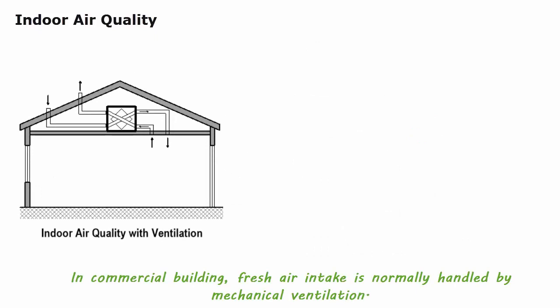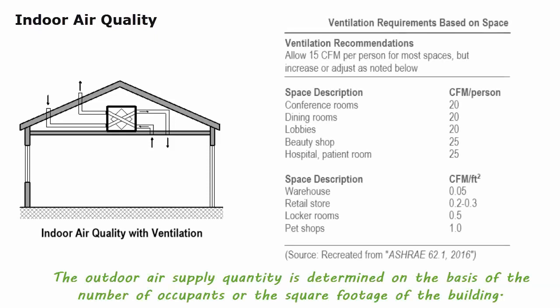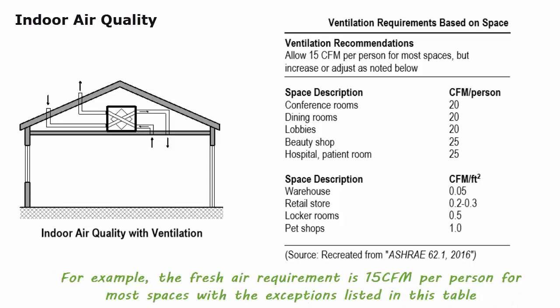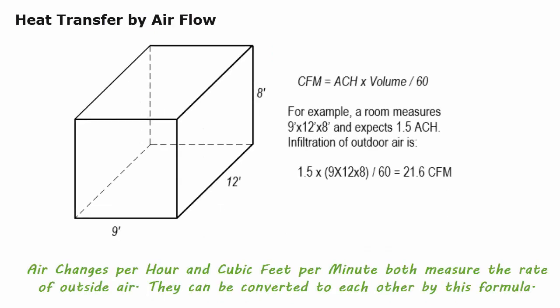In commercial buildings, fresh air intake is normally handled by mechanical ventilation. The outdoor air supply quantity is determined on the basis of the number of occupants or the square footage of the building. For example, the fresh air requirement is 15 CFM (cubic feet per minute) per person for most spaces. Air changes per hour and cubic feet per minute both measure the rate of outside air and can be converted to each other by a formula.